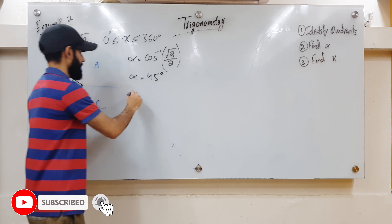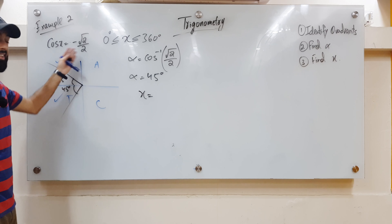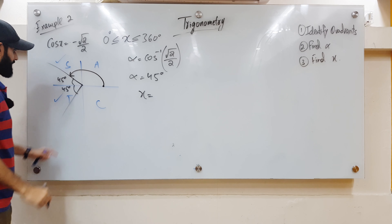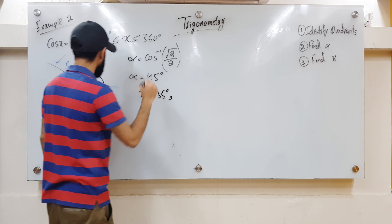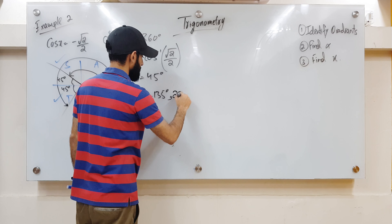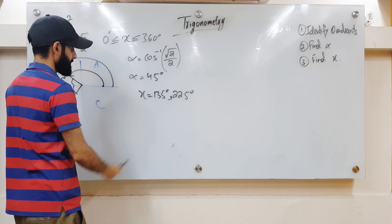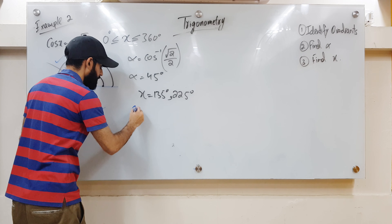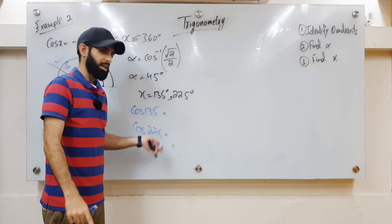Step three: find the values of x. There are going to be two values in the range 0 to 360, and we move in a counter-clockwise direction. For the first value, starting from the positive x-axis and going anti-clockwise to the second quadrant: a full straight line would be 180, so 180 minus 45 gives x = 135 degrees. The second value is 180 to the boundary of the third quadrant plus another 45, so 180 plus 45 gives x = 225 degrees. To check your answers, evaluate cos(135) and cos(225) and let me know what you find in the comment section.